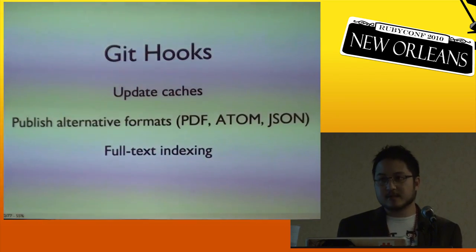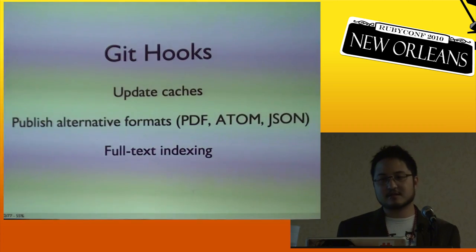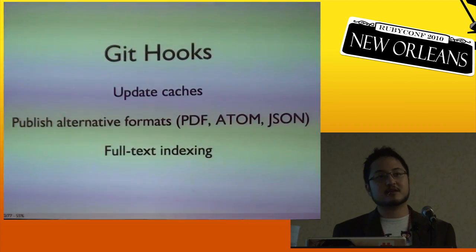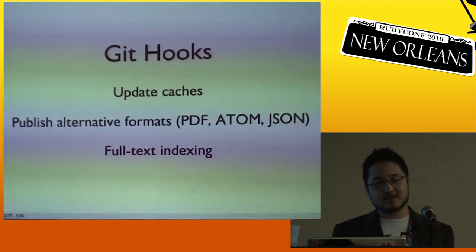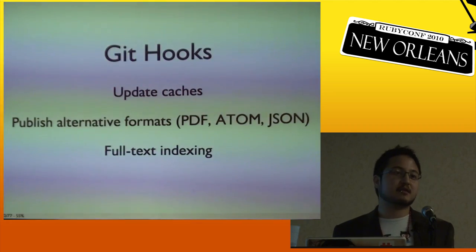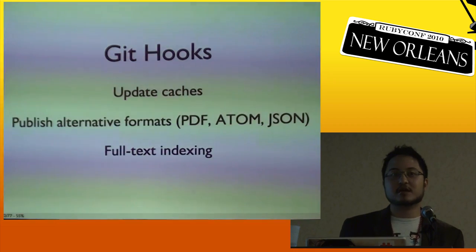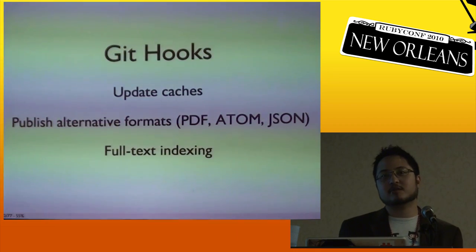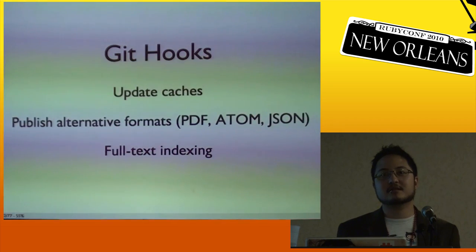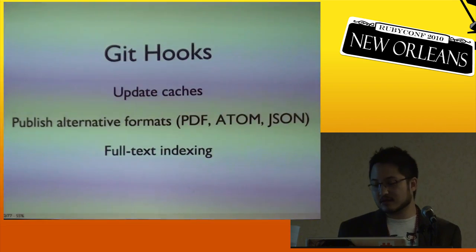This literally just cats all the contents of the files and runs them through grep — obviously it won't scale, but most wikis are pretty small, so this works pretty well. With Git you also have Git hooks, which open up other possibilities: updating caches, publishing other formats, and integrating with other backend systems. For instance, every time you push a wiki to GitHub, we kick off some jobs that update caches and index the data.